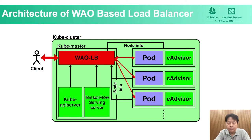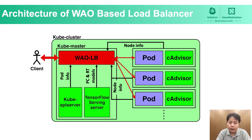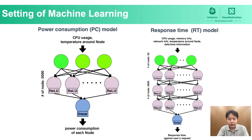For the WoW Load Balancer, WoW LB gets the pod locations periodically using the Kube API server. When receiving a request from a client, WoW LB first collects information about each pod — such as CPU, memory, and network status — from cAdvisor. Then WoW LB predicts the increase of power consumption using a PC model and response time using RT models. Both models are based on TensorFlow Serving server. By utilizing this information, WoW LB is able to perform pod allocation based on the trade-off between power consumption and response time.